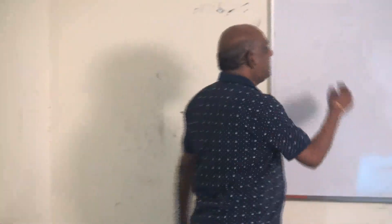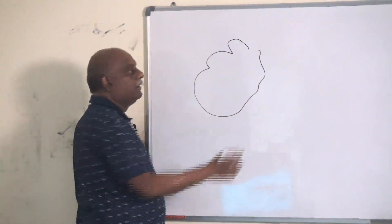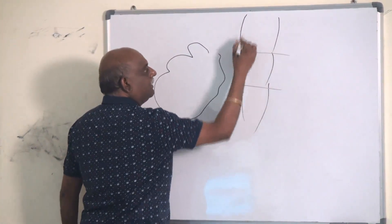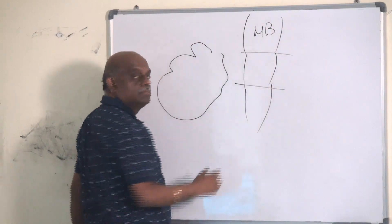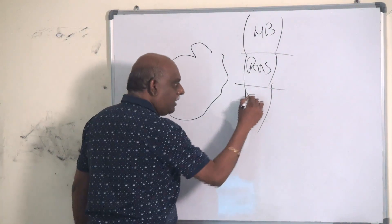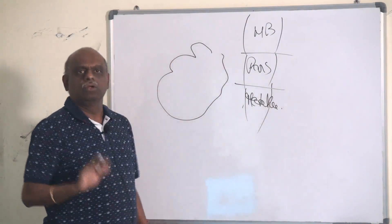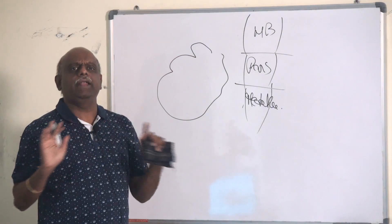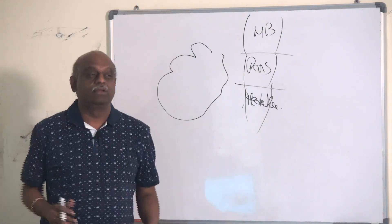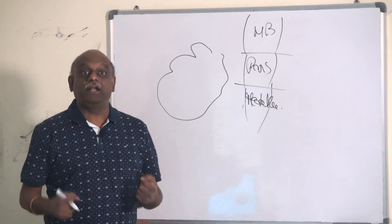If you look at the cerebellum, here you have the brainstem. What does the brainstem contain? Midbrain, pons, and medulla. If you have not read any anatomy in your first year, you need to go back to first year. First year neuroanatomy is a challenging topic.